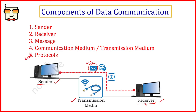A protocol is any set of rules that are agreed upon by the sender and the receiver before starting the communication. For example, if the sender only knows English and the receiver knows both English and Tamil, the sender would tell the receiver that the message will be sent in English — the language both understand. There are many such rules that need to be agreed upon before any communication over a network, which is why protocol is counted among the five components of data communication.